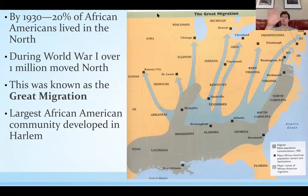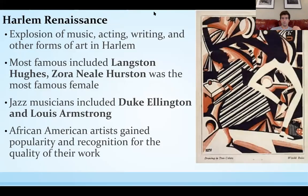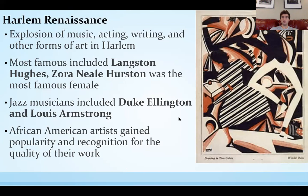Now let's shift away from Prohibition and traditional versus modernist values, and talk about the Harlem Renaissance. By 1930, at the end of the 20s, about 20% of all African Americans lived in the North. During the World War I years, over a million moved north — this was known as the Great Migration. The largest African American community developed in Harlem, up in New York City, and it gave birth to the Harlem Renaissance — an explosion of music, acting, writing, and other forms of art in Harlem. This art was primarily, almost entirely, created and supported by Black artists and Black culture.